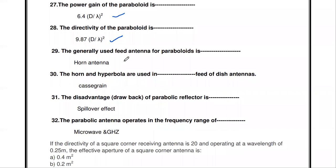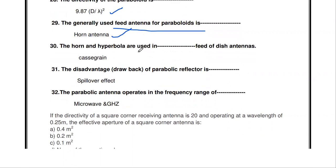The next question: the generally used feed antenna for the paraboloid is the horn antenna. In the reflector antenna arrangement, the reflector is the secondary element, and the primary element is the feed antenna. The horn antenna is generally used as the feed element for the paraboloid.